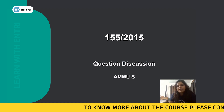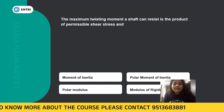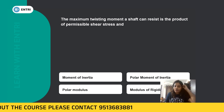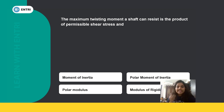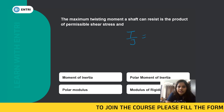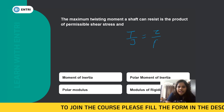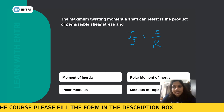So, we will look at the questions in this video. The first question is: the maximum twisting moment a shaft can resist is the product of permissible shear stress and what? The torsion formula is T/J = tau/r. We need to find what the maximum twisting moment is the product of.